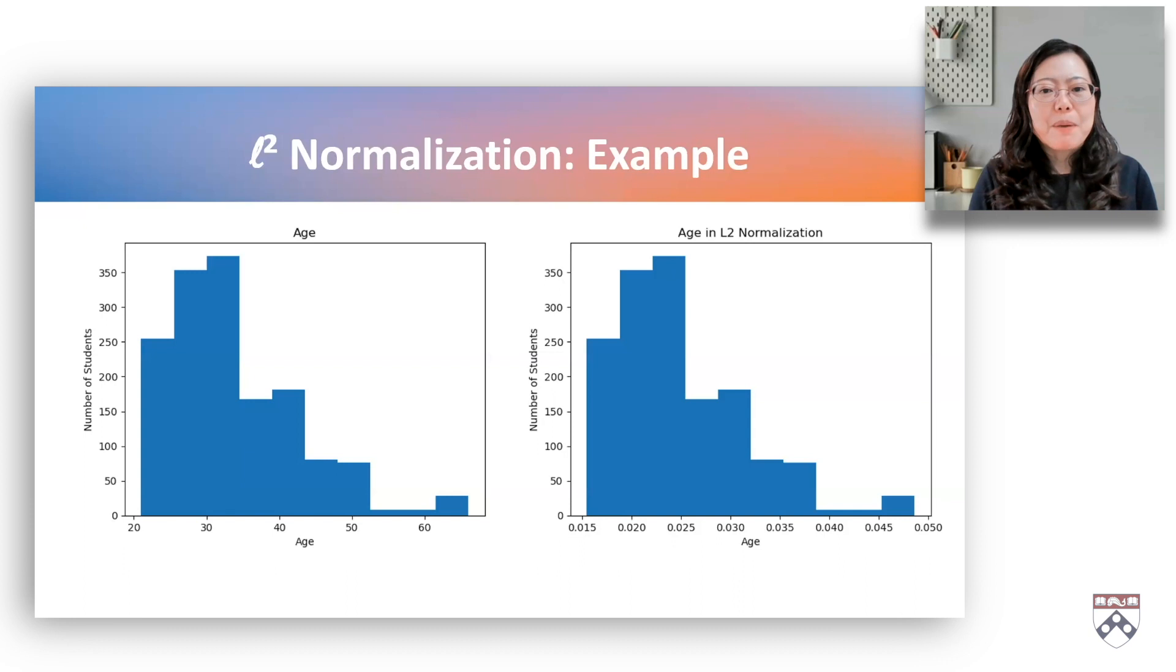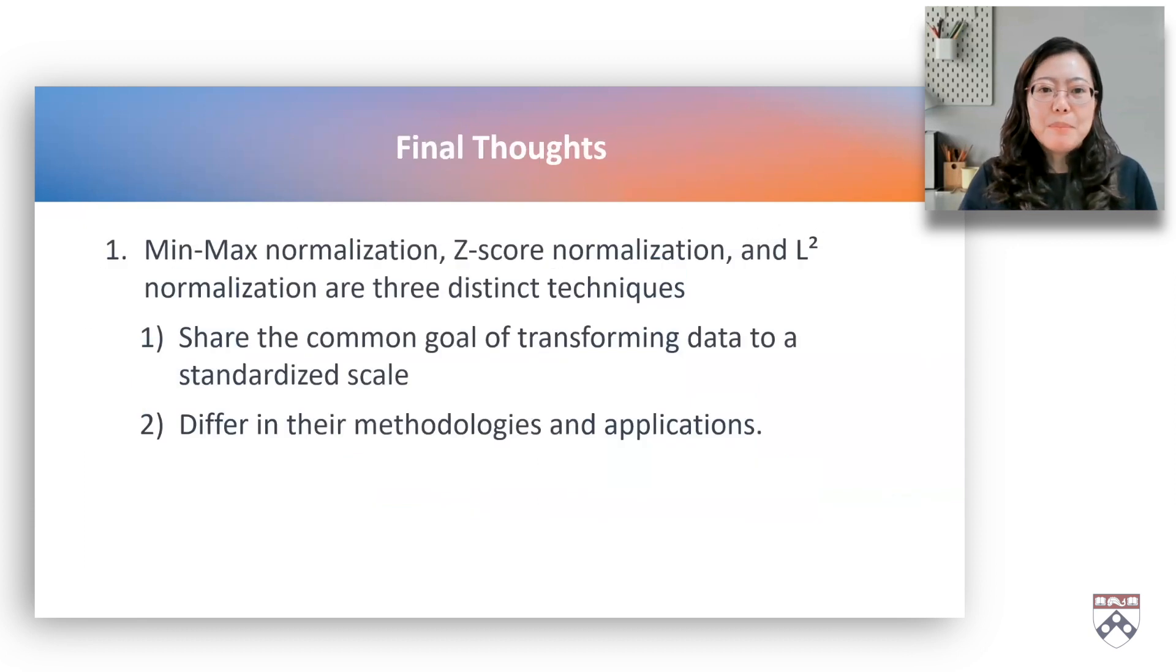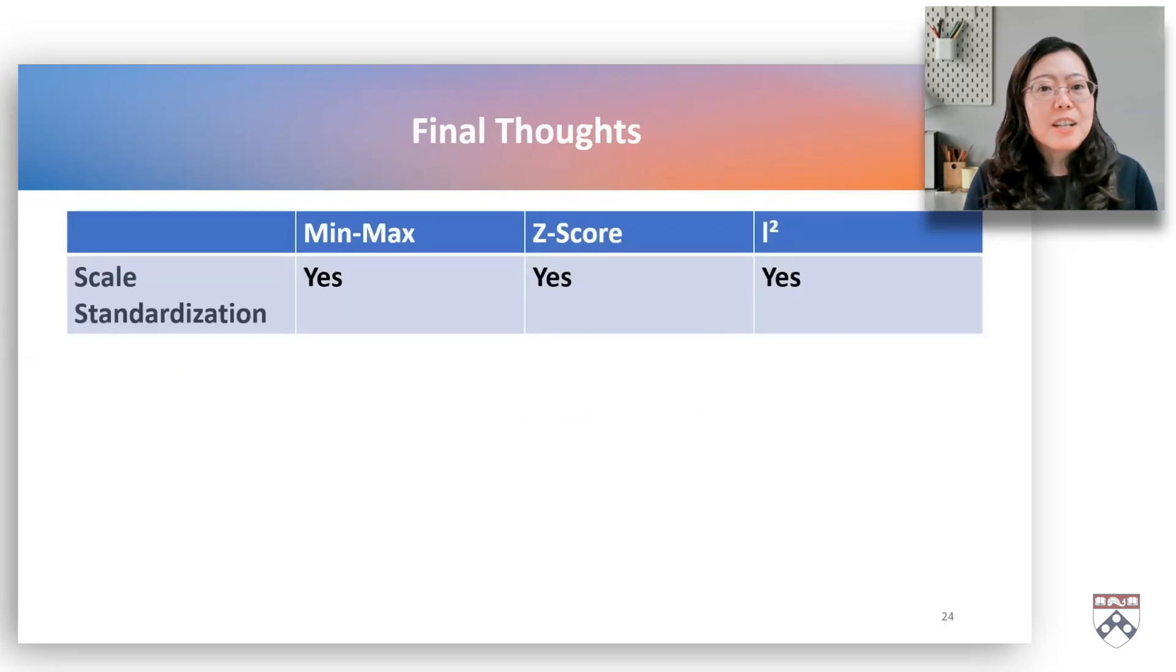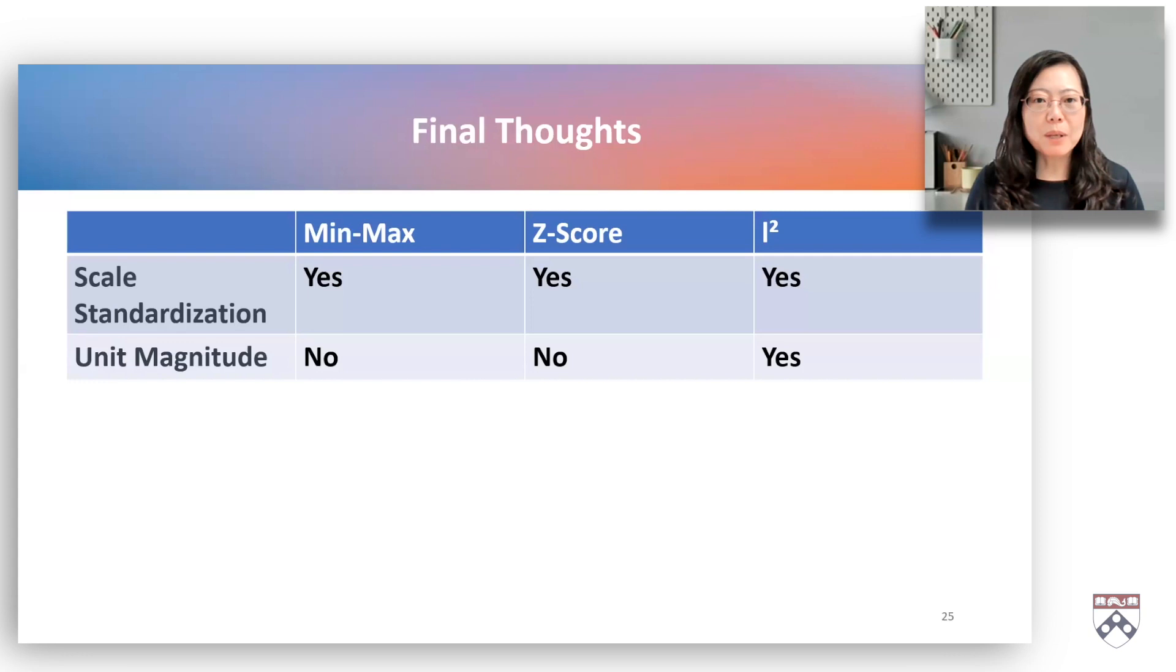This makes it easier to compare the contributions of individual age values to the overall dataset. Min-max normalization, z-score normalization, and L2 normalization are three distinct techniques that share the common goal of transforming data to a standardized scale, yet they differ in their methodologies and applications. Scale standardization: all three normalization techniques aim to standardize the scale of variables, ensuring a consistent basis for comparison in analysis and machine learning models. Unit magnitude: L2 normalization scales vectors to have a unit magnitude of 1. Min-max scaling and z-score normalization don't involve unit magnitude.